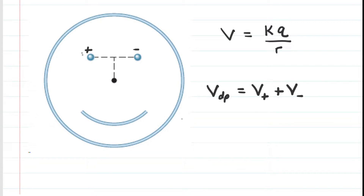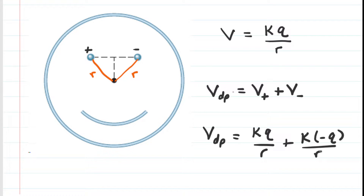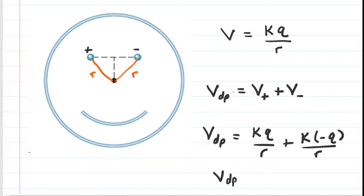What's interesting here is the symmetry of the scenario. The distance from the positive charge to the point in question is r, and the distance from the negative charge to the point in question is also r. So when we compute the potential of the dipole, we get k multiplied by q over r for the positive charge, and k multiplied by negative q over the same distance r for the negative charge. These two terms cancel out — kq/r minus kq/r equals zero. So the potential produced by the dipole at the center of the circle is zero volts, and it contributes no potential.